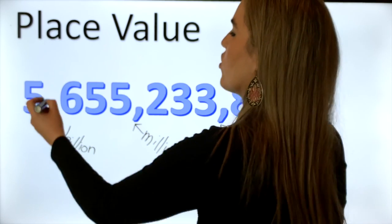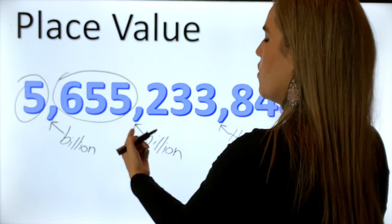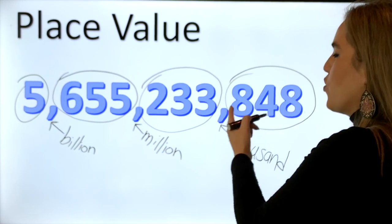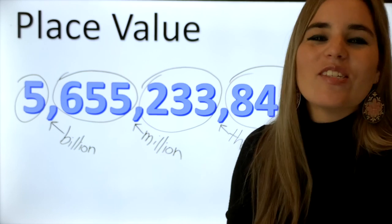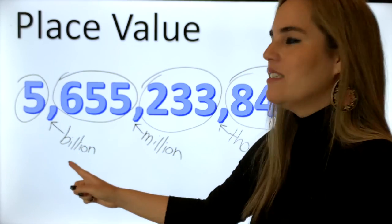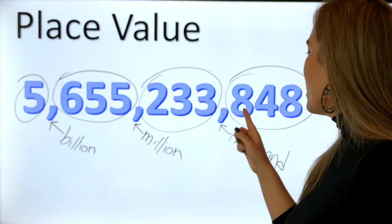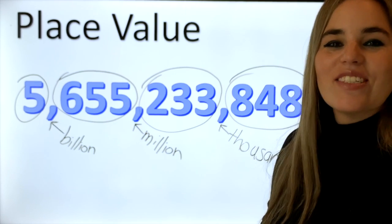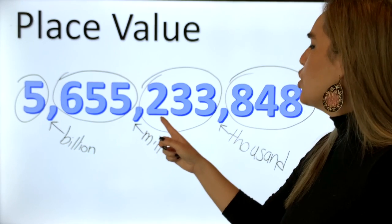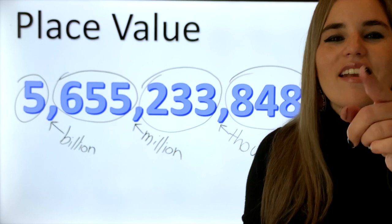Now we're gonna read the number together. Here's how you do it: you start with the number, then you say the name of the comma, then you read the next number, say the name of the comma, read the next number, say the name of the comma, and finish with the last number. I'm gonna read it on my own first, you listen, and then we'll say it together: five billion, six hundred fifty-five million, two hundred and thirty-three thousand, eight hundred and forty-eight. Now let's say it together: five billion, six hundred and fifty-five million, two hundred and thirty-three thousand, eight hundred and forty-eight. Is it that simple? Now you read it on your own.